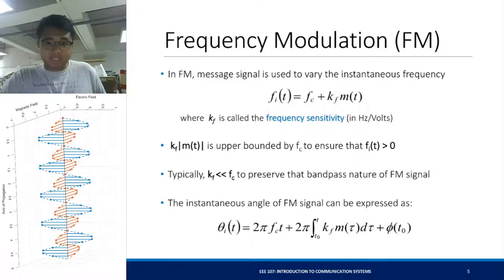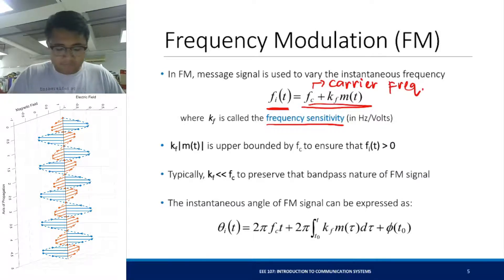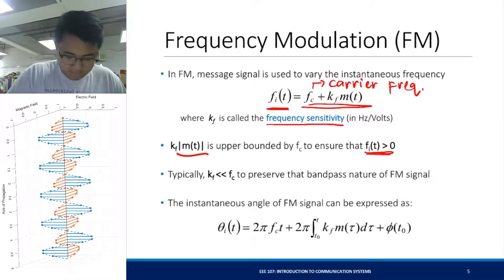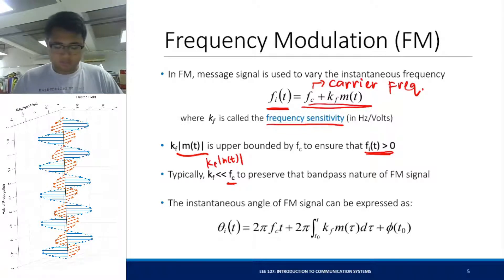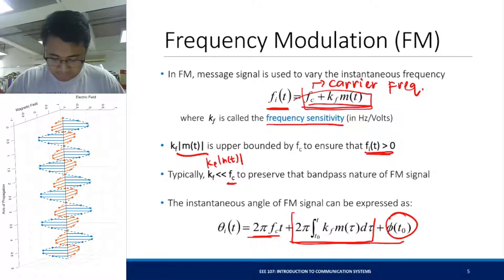Frequency modulation looks like this: the message signal is used to vary the instantaneous frequency. Your instantaneous frequency equals f_c plus k_f times m(t), where k_f is called the frequency sensitivity and f_c is the carrier frequency. k_f m(t) is upper bounded by f_c to ensure the frequency is always positive, and typically k_f m(t) is much less than f_c to preserve the bandpass nature of the FM signal. The instantaneous angle of the FM signal is obtained by integrating this expression — you have an initial phase, your carrier frequency term, and the effect of the FM signal on the instantaneous phase.